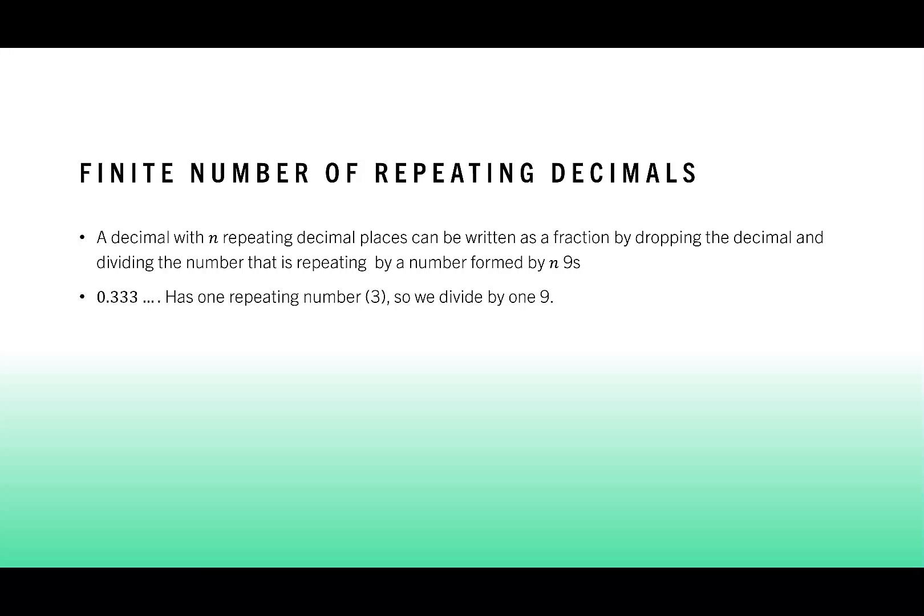Consider 0.333, where the three repeats. We have one repeating number, which is the three, so we're going to divide by 1 nine. 3 over 9 reduces to 1 over 3, which we know is 0.333.